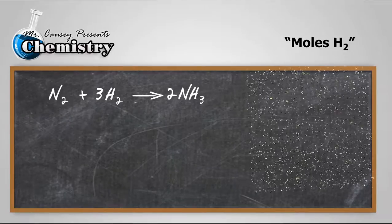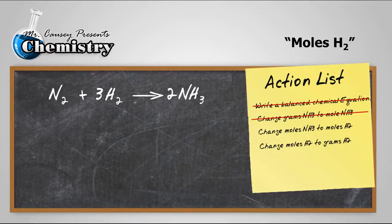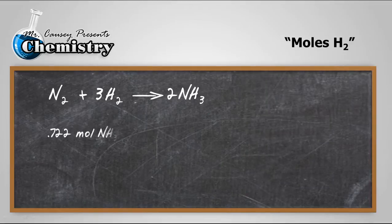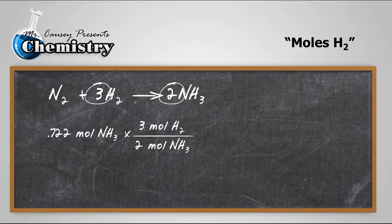Alright, next step. Now let's do moles of hydrogen. So, going from moles of ammonia to moles of hydrogen requires the mole ratio. And you'll notice there that the mole ratio is 3 to 2. So, let's set that up. And I'm going to put the moles of ammonia on the bottom so that moles of ammonia can cancel out.